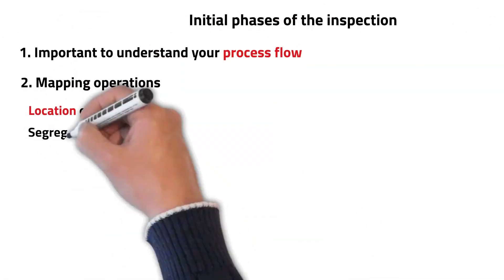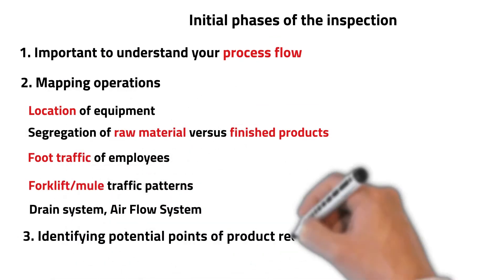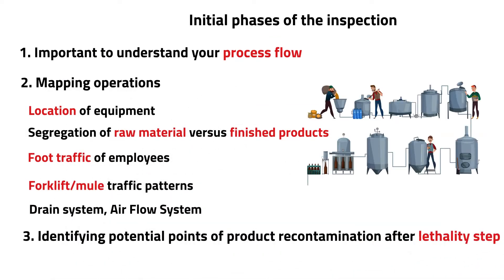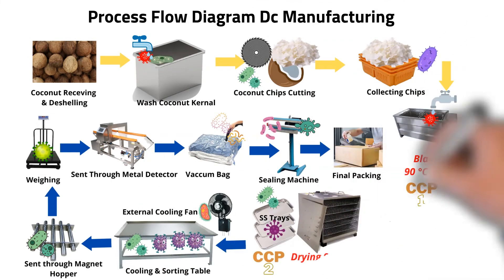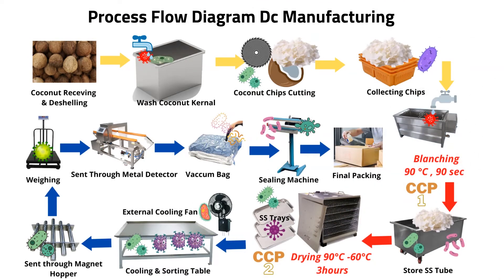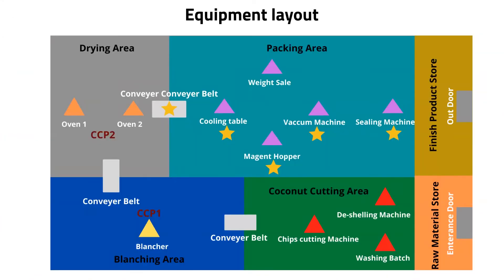Once your EMP team is assembled, it is important to understand your process flow diagram and emphasize identifying potential points where your product can be recontaminated. Here you can see which points your product is open to the environment after the final CCP point. Mapping of the following layouts — processing equipment, foot traffic, forklift traffic, drain system, and air flow layout — helps you identify harborage niches in the production line.